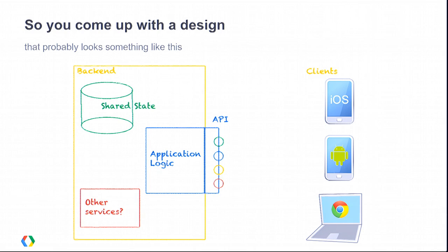So keeping this in mind, we have an app that needs to work on multiple platforms. It needs to scale. We come up with an architecture: a single backend with your application logic talking to some shared state, some storage, and maybe some other fancy services. On top of that application logic — really the core of your application — you're probably standing up an API. That API is going to be called by all of your client applications running on iOS, Android, and in web browsers.